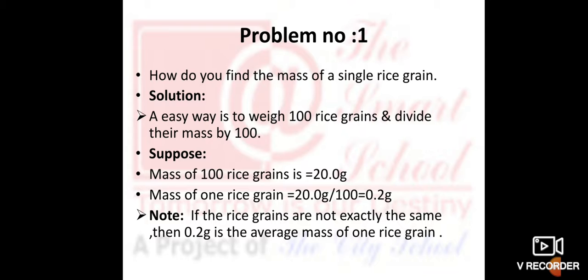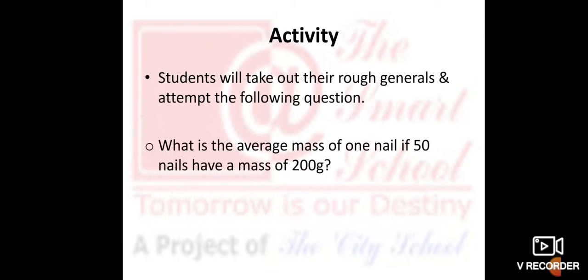If the rice grains are not exactly the same, then 0.2 grams is the average mass of one rice grain. Some rice is greater, some rice is less in mass. This is the average mass of rice for practice purposes.